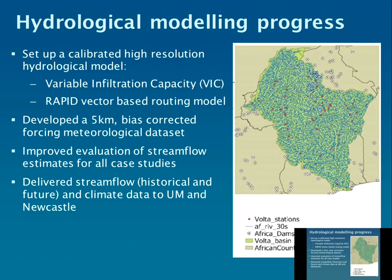We do the hydrological modelling on a gridded five-kilometre by five-kilometre basis, driven by a bias-corrected meteorological forcing dataset including precipitation and temperature. We've been evaluating the streamflow outputs against observations at those red dot stations. We've done historic simulations and initial future climate simulations, providing the streamflow data to the University of Manchester and the historic climate data to the University of Newcastle.